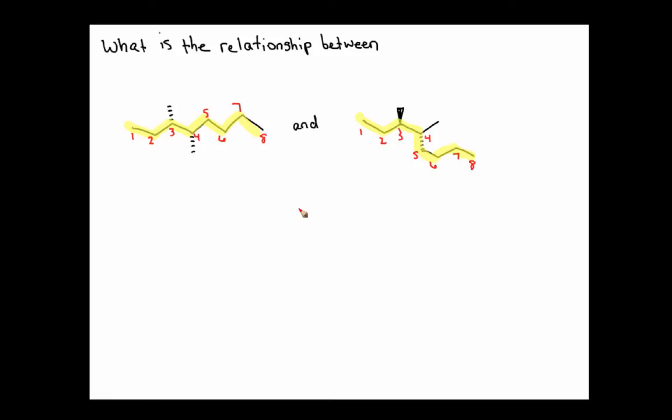So for both of these, we have an octane chain with methyl groups at carbons 3 and 4. So both have a general name, 3,4-dimethyloctane. So we know they must be some sort of isomers or identical compounds.